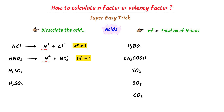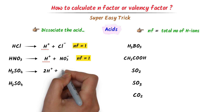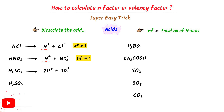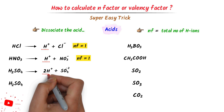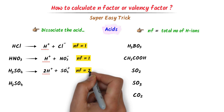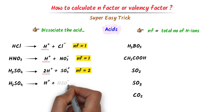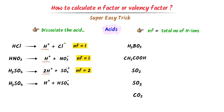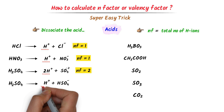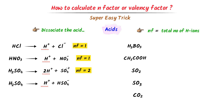In case of sulfuric acid, when it dissociates, it produces two hydrogen ions plus one sulfate ion. There are two hydrogen ions, so the n-factor of sulfuric acid is 2. Remember that there is also another possibility — when sulfuric acid dissociates, it can also produce one hydrogen ion plus HSO4⁻ ion. Here the hydrogen ion count is 1, so in this case the n-factor of sulfuric acid is 1.